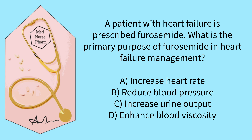A is incorrect. Furosemide is a diuretic that primarily increases urine output and reduces fluid volume; it does not have an effect on the heart. B is incorrect. While furosemide can indirectly reduce blood pressure by decreasing fluid volume, its primary action is diuresis, not blood pressure reduction. C is correct. Furosemide is a loop diuretic that increases urine output by inhibiting sodium reabsorption in the loop of Henle, helping reduce fluid volume in heart failure. D is incorrect. Furosemide reduces blood viscosity by decreasing fluid volume, so this option is incorrect.